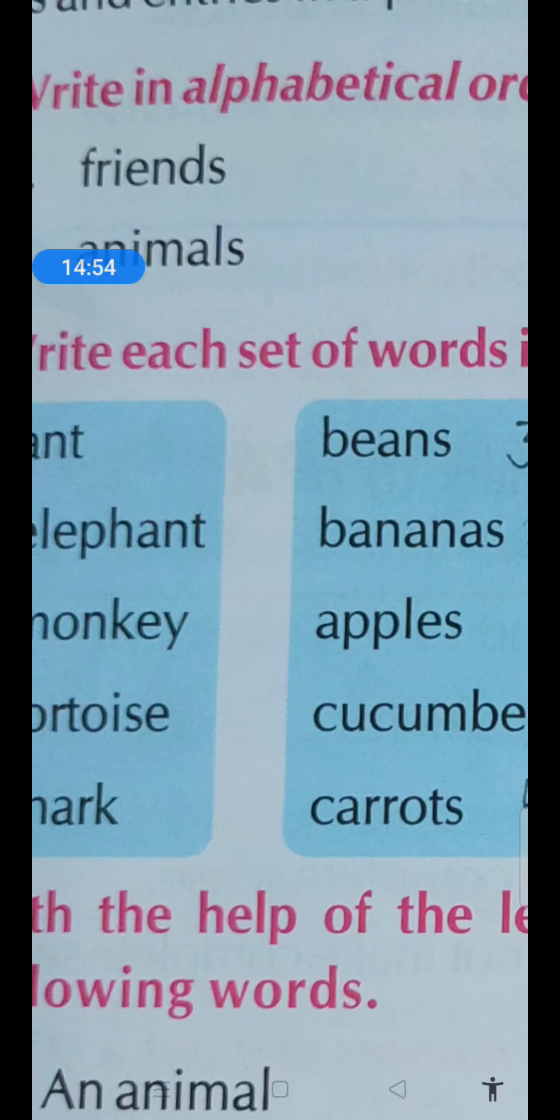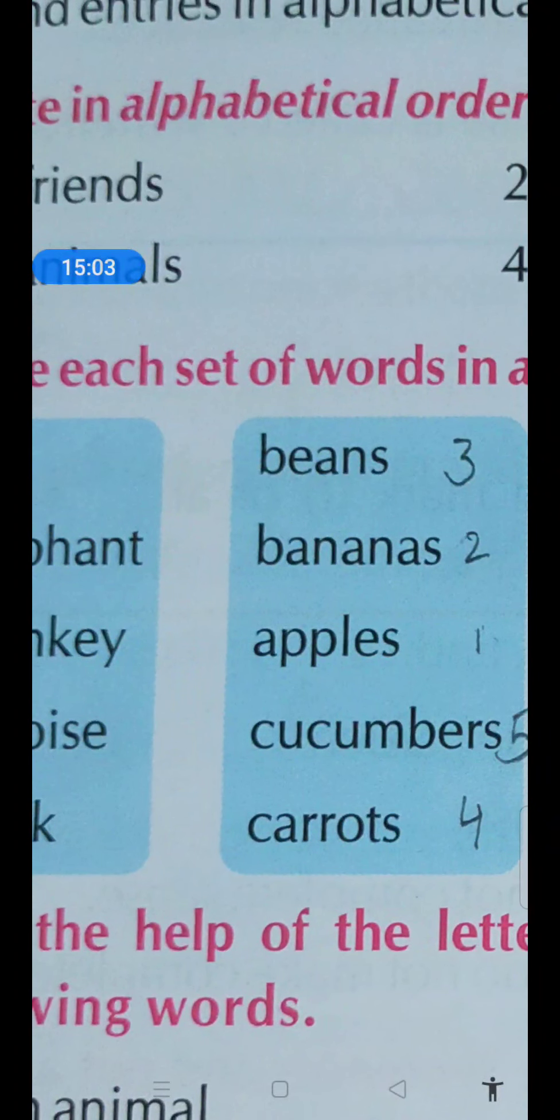So, for which letter we will give the first preference? First, which word we will use? Carrots. Because A is the first letter in alphabet. So, carrots is the fourth position and cucumber is the fifth one. Is it okay students?